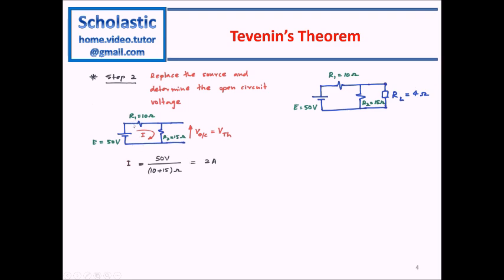Voltage is 50 volts. These resistances are in series, therefore 10 plus 15 is the total resistance. 50 divided by the total resistance gives 2 amperes as the current in this circuit.